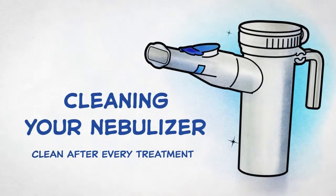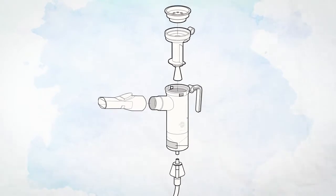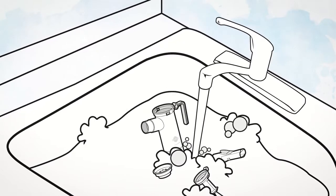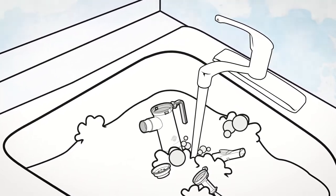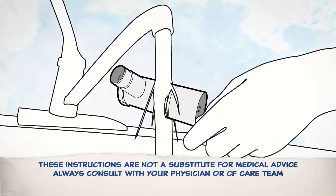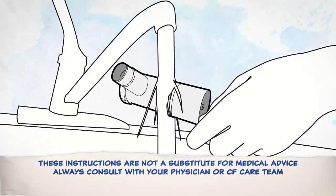Cleaning your PARI Reusable Nebulizer: Disassemble reusable nebulizer parts as illustrated here. Wash all parts with warm water and liquid dish soap. Please do not wash the tubing. Rinse the reusable nebulizer parts thoroughly with warm water and shake to remove excess water.